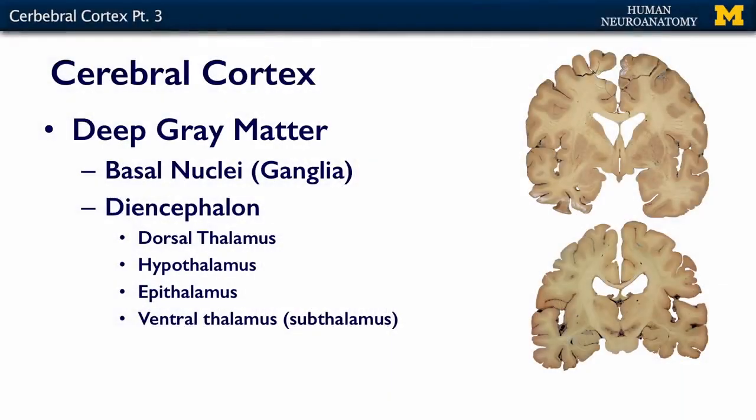So beneath the cerebral cortex, we have deep gray matter. And I want to point out to you that here is our surface. Here is our neocortex, and it's not very thick. You just kind of look at that.